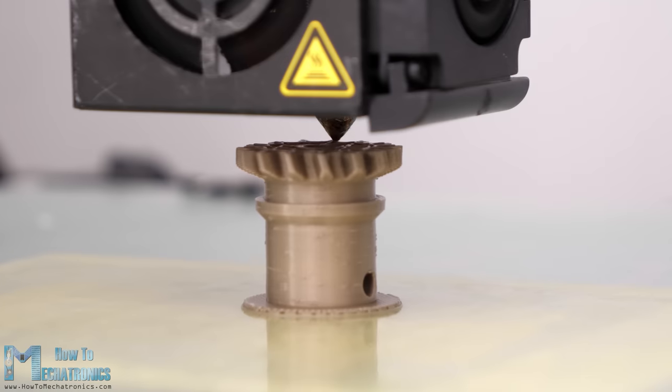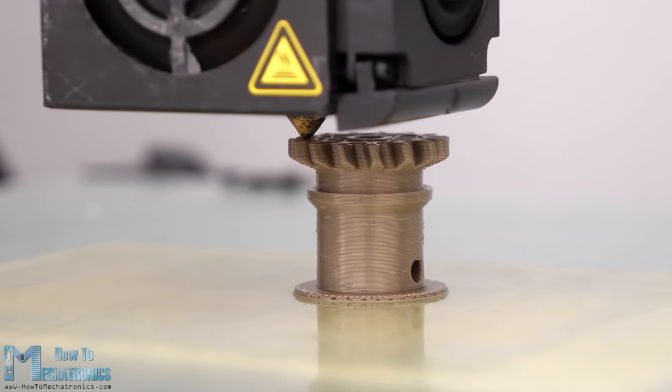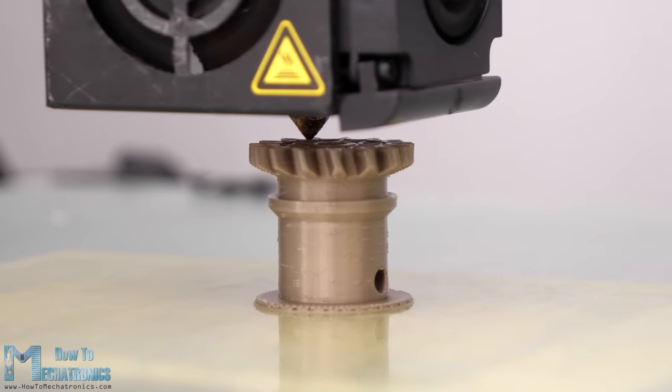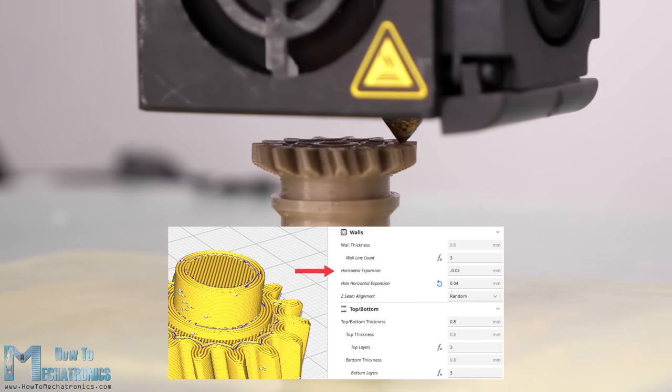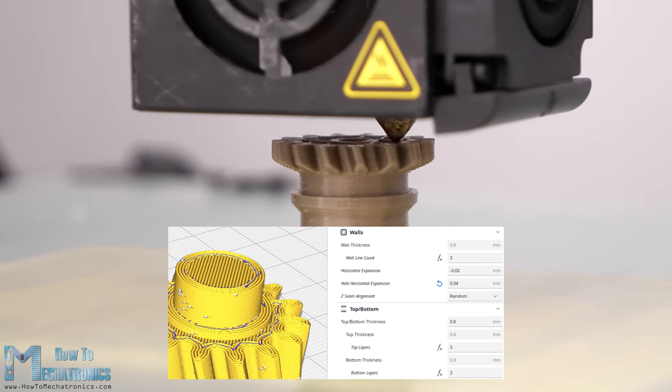When 3D printing, in order to get accurate dimensions of the parts, we need to have proper settings in our slicing software. The most important setting for getting dimensionally accurate prints are the horizontal expansion and hole horizontal expansion settings. If we leave these settings by default, the prints outer dimensions as well as the holes are usually smaller than the original model.